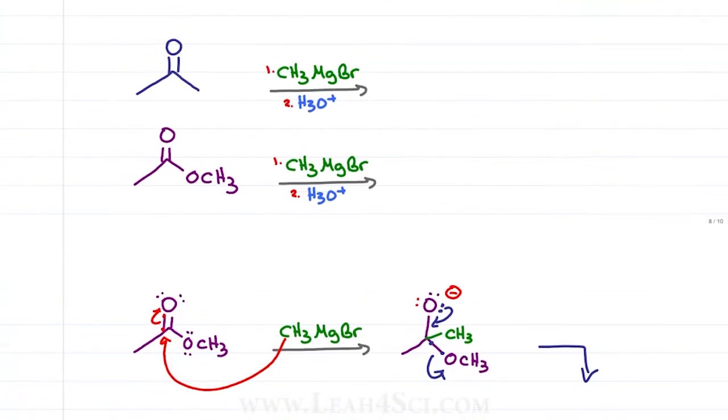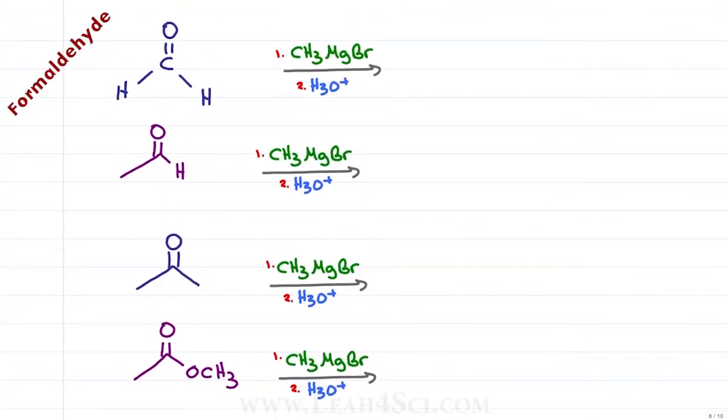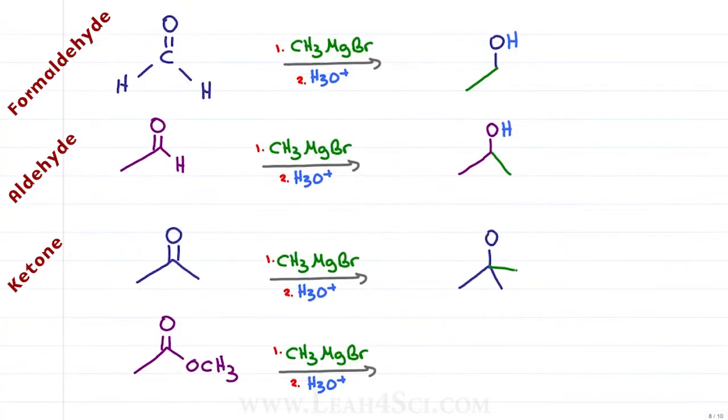Let's look at the products again. Where the formaldehyde gave us a primary alcohol, the aldehyde gave us a secondary alcohol, the ketone gave us a tertiary alcohol and the carboxylic acid derivative ester also gave us a tertiary alcohol.